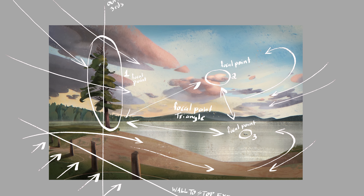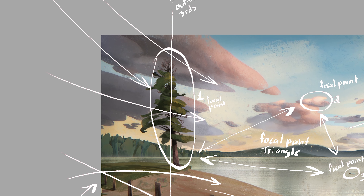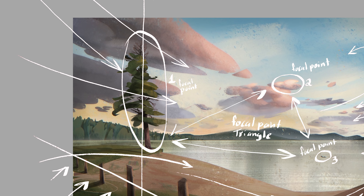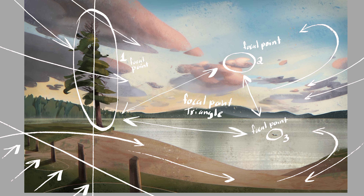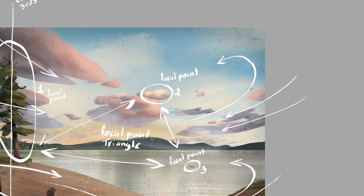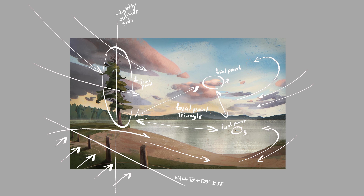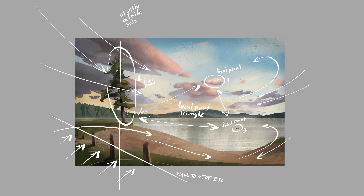One thing I was mindful of while painting was making sure I didn't have lines pointing straight off the canvas. For example, the sweeping lines come in with the clouds, sweep up, and at the very end lift back up again rather than sweeping straight down and off the canvas. Same with the sand — it arcs down and then sweeps back up and arcs around again, instead of going straight off the canvas.